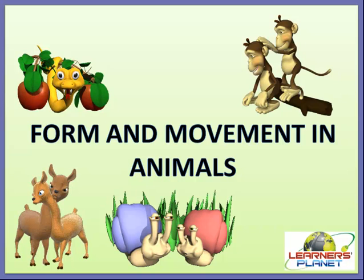The three types of joints we studied were fixed joints, freely movable joints, and slightly movable joints. Freely movable joints are further divided into four types: ball and socket joint, pivot joint, gliding joint, and hinge joint. This is what we are going to discuss in detail in today's session. Welcome to Learner's Planet — let us start with the types of freely movable joints.